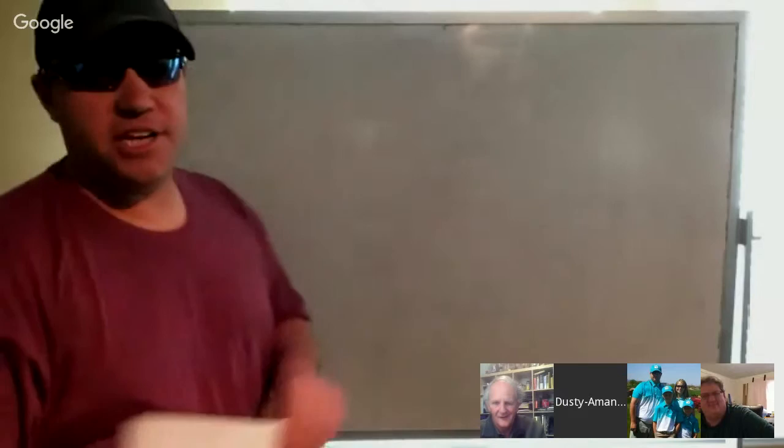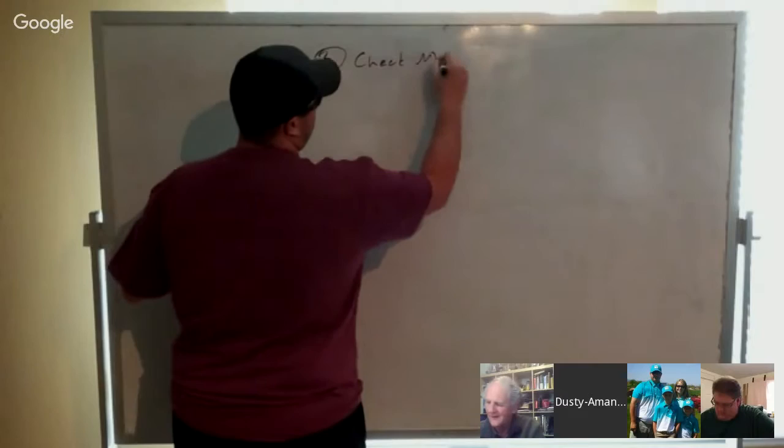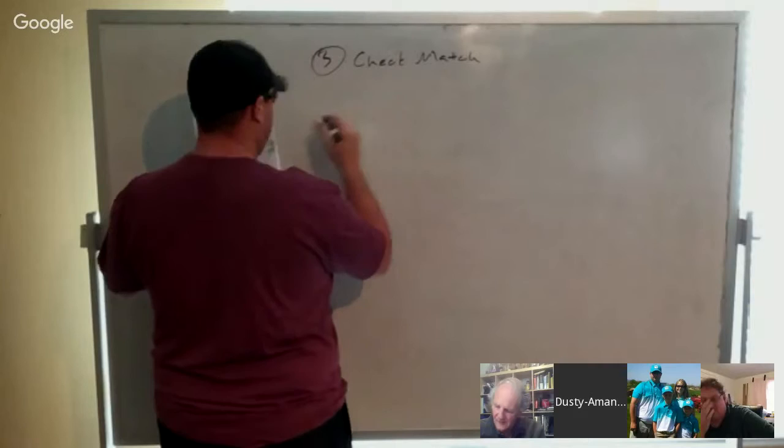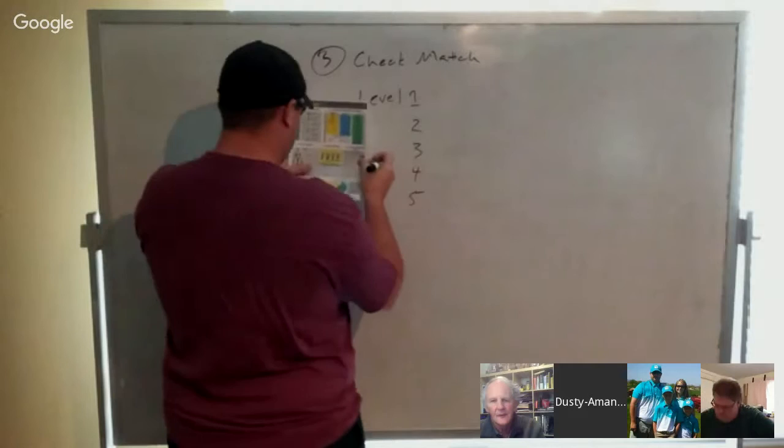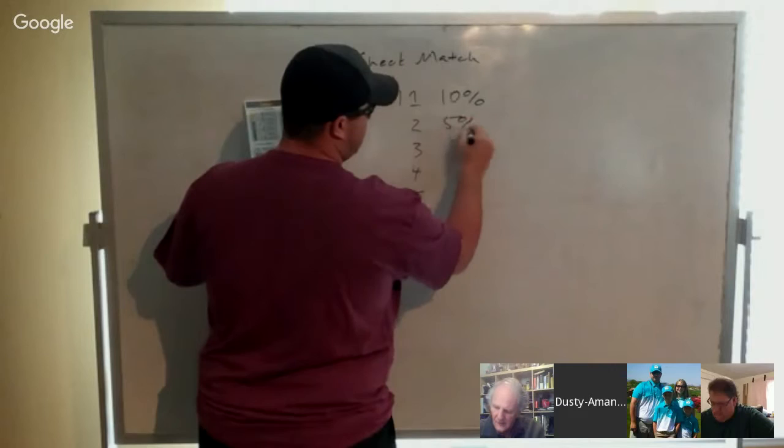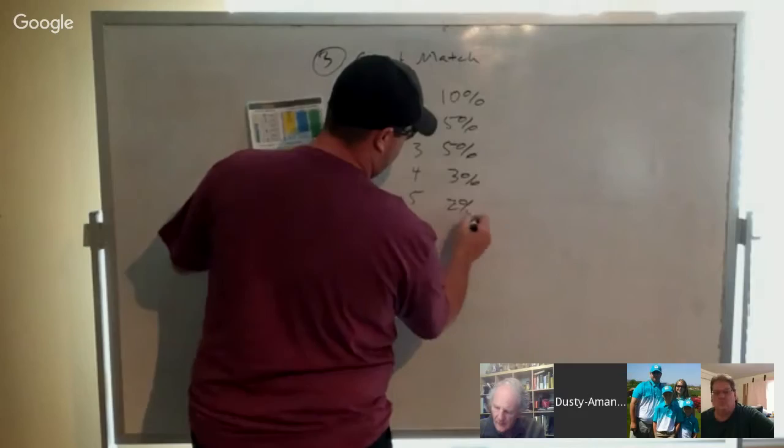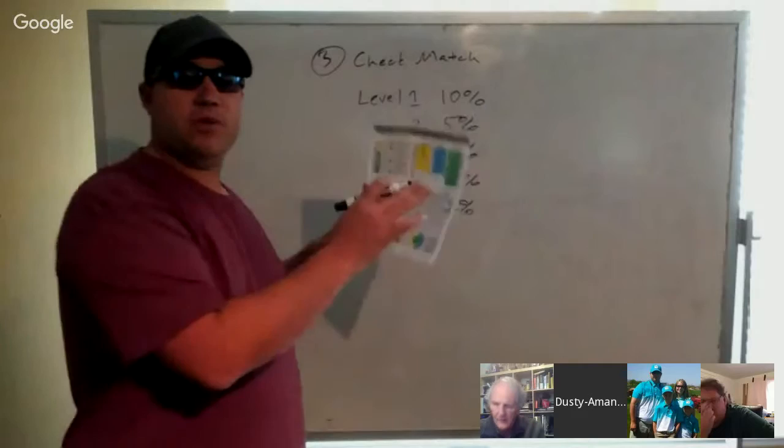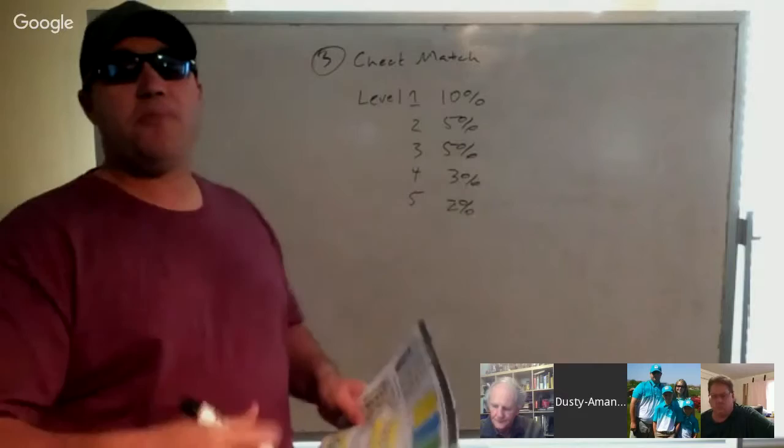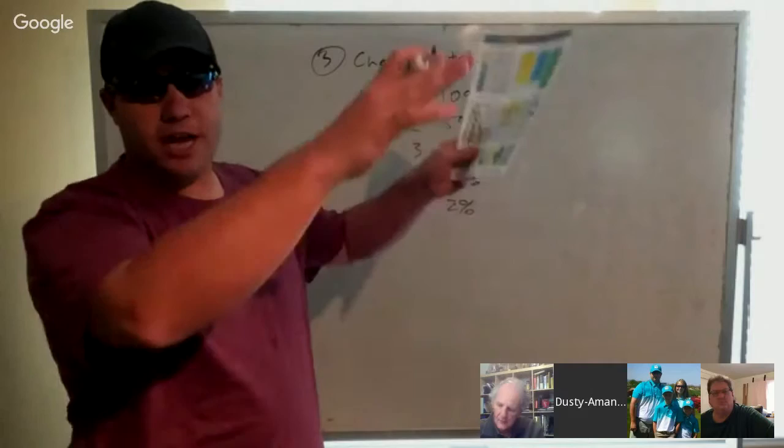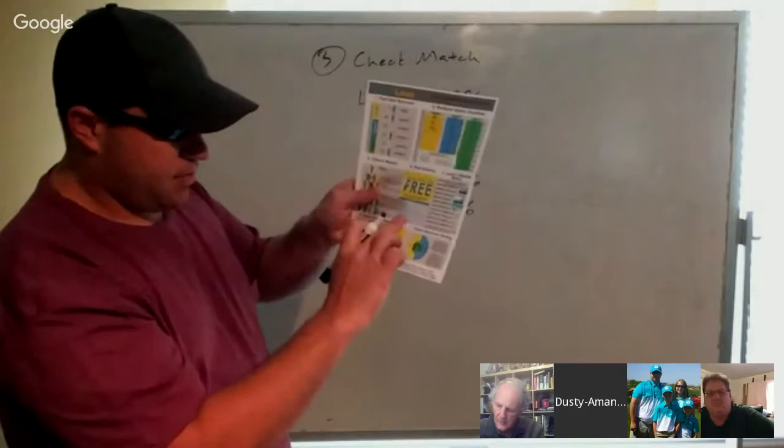Next thing we're going to talk about is the check match. Another unusual part about check matching. 10% first level, 5% second level, 5% third level, 3% fourth level, and 2% on the fifth level. Now, you check match not just the residual matrix money, but you also check match the luxury lifestyle bonuses, which is the next piece of our plan that we'll talk about. And all your personally visionary and aboves that you have enrolled, you're check matching that enrollment lineage. And you can see the detail broken down right here on the top line.